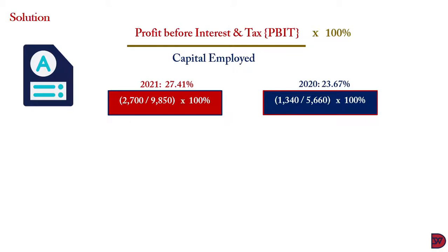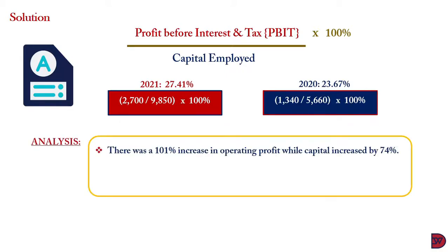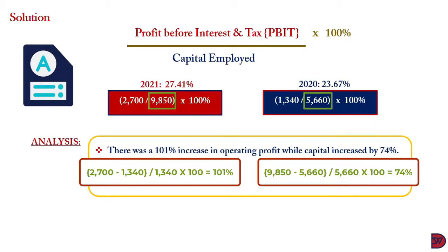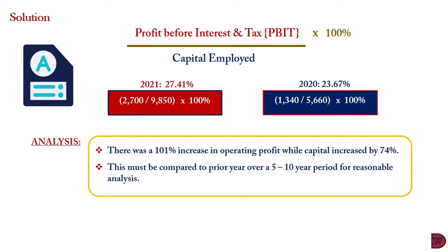For 2020, the return on capital employed is 23.67%, arrived at by dividing the operating profit of 1,340 by capital employed of 5,660 multiplied by 100%. We see an increment from 2020 to 2021. The operating profit increased by 101% from 2020 to 2021, while capital employed increased by only 74%, which explains why the return on capital employed increased. This trend should be studied over a period of five to ten years to ensure there is no window dressing or manipulation to achieve a short-term increase that would affect the long-term viability of the business.